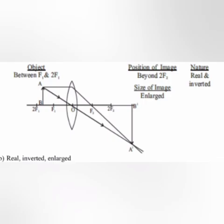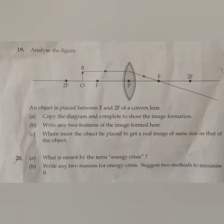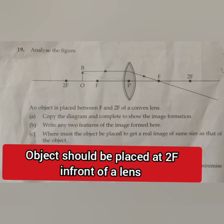(c) Where must the object be placed to get a real image of same size as that of the object? Answer: Object should be placed at 2F in front of the lens.